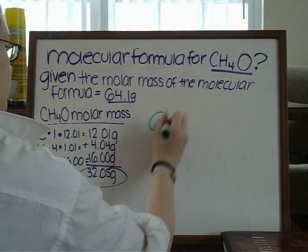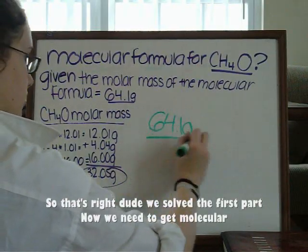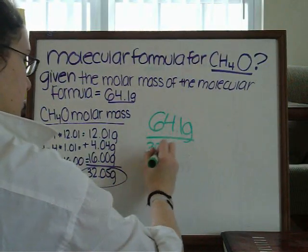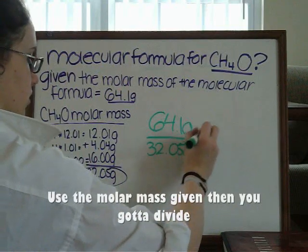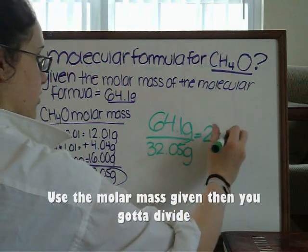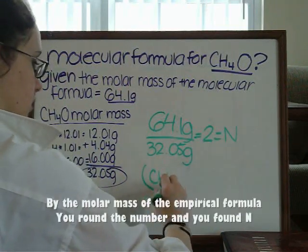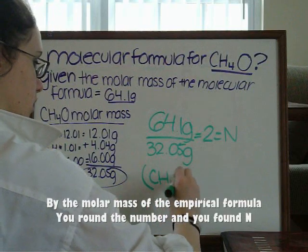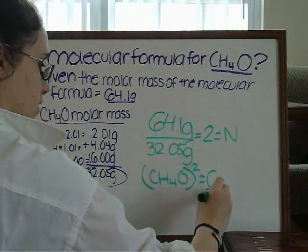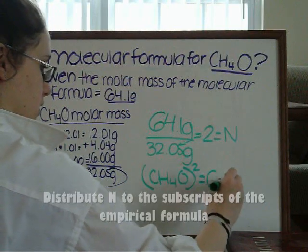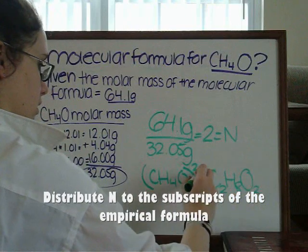So let's write through — we solved the first part. Now we need to get molecular. Use the molar mass given, then you gotta divide by the molar mass of the empirical formula. You round the number and you've found n. Distribute n to the subscripts of the empirical formula.